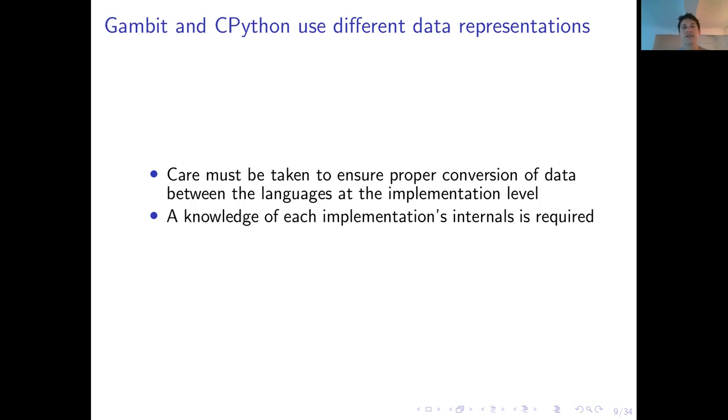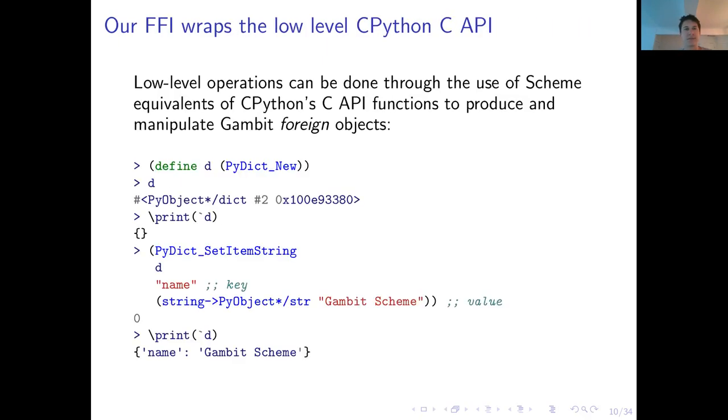Now, Gambit and CPython, of course, they use different data representations, and so we must be careful to ensure the proper conversion of data between the languages. This happens at the lowest level of the implementation in each language. So, in this particular case, we need a very good knowledge of the implementation's internals, which are Gambit internals, and a good knowledge of the well-documented CPython C API for CPython.